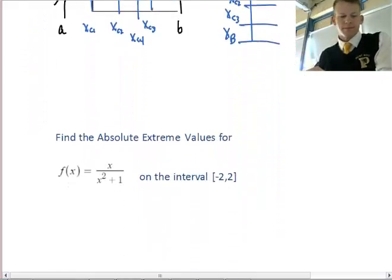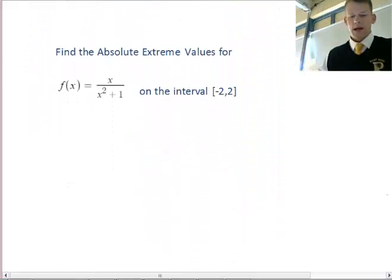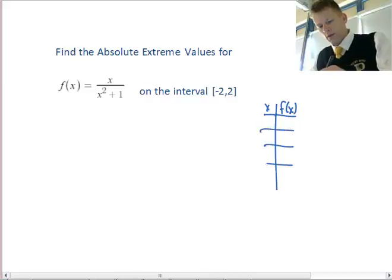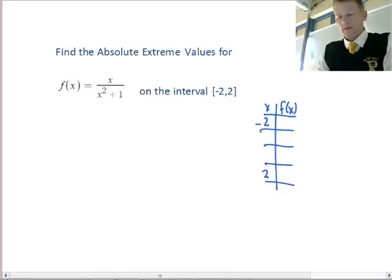Let's do an example. Find the absolute extreme values for f(x) = x/(x² + 1) on the interval [-2, 2]. I gave a rational function because it would be a little more difficult than a typical easy problem. First I construct my table to remind myself to check the endpoint values, putting -2 and 2 on there. I might need more space depending on how many critical points I get from the derivative.